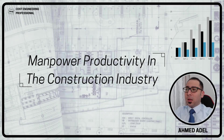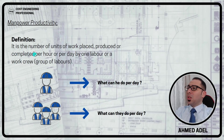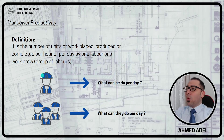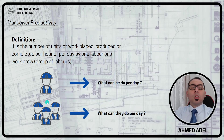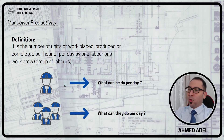Welcome back. Let's start our video today with the definition of manpower productivity. What is productivity? It's the number of units of work placed, produced, or completed per hour or per day by one labor or a work crew — meaning a group of laborers. So what can one labor do per day, or what can a group of laborers do per day or per time unit — per hour, per week, per month?